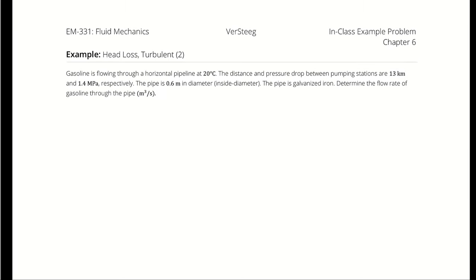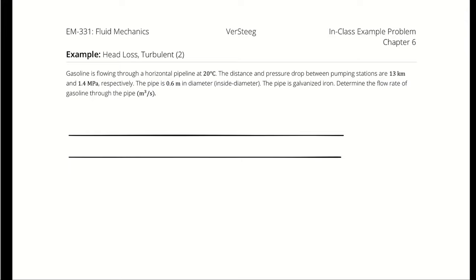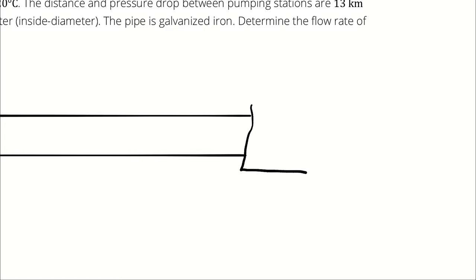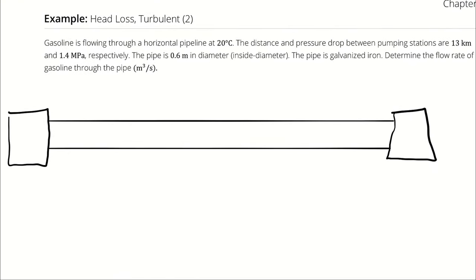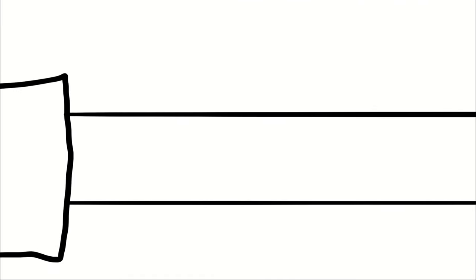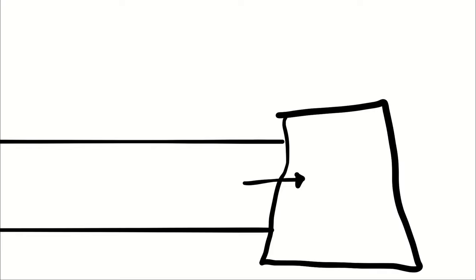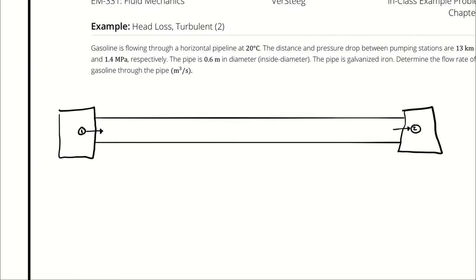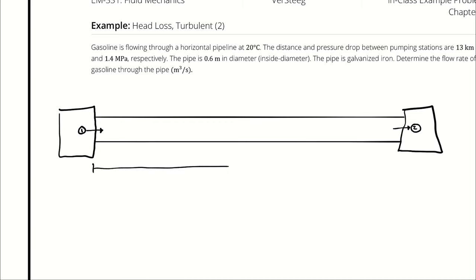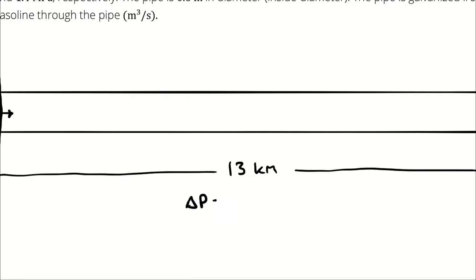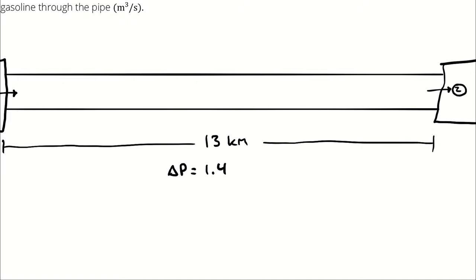Starting with a diagram showing two pumping stations. State 1 is on one side of the first pumping station, State 2 is on the other side. The distance between them is 13 kilometers, and the pressure drop across that distance is 1.4 megapascals.